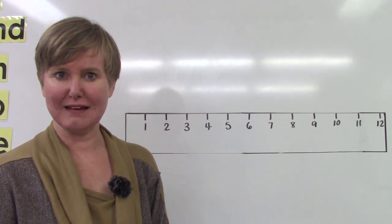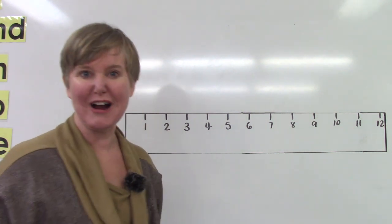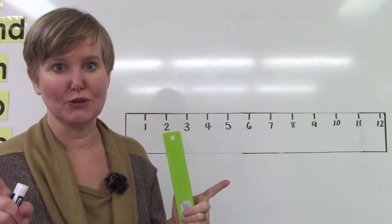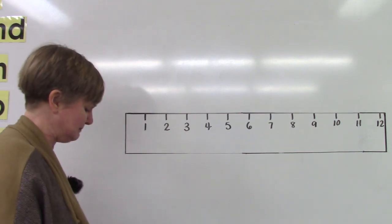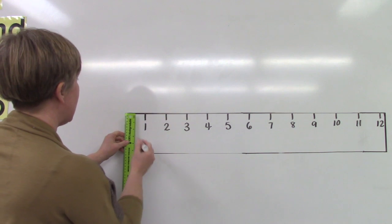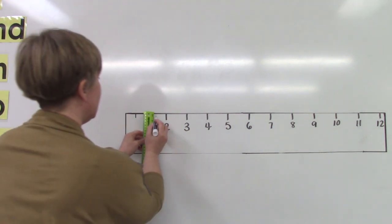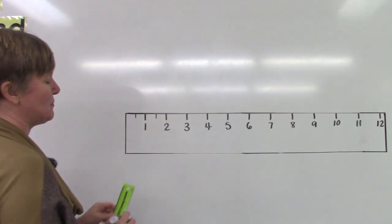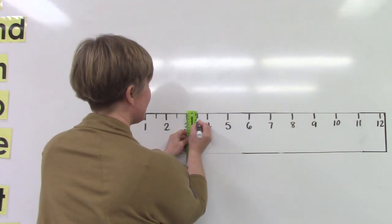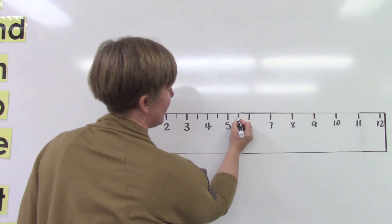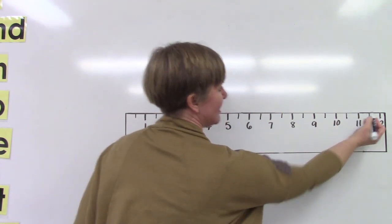What would half of an inch be? Well it'd be taking an inch and cutting it right in half. So I'm gonna do that on the board and if you have a ruler I would like for you to find half of an inch on the ruler. Let's see, if this is one inch, half of an inch would be right in between. And then I'm gonna put half of an inch between the one and the two and all the way down our ruler. I'm gonna draw half of an inch.